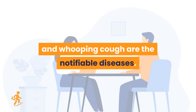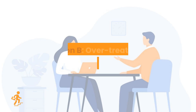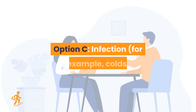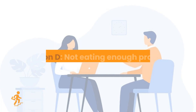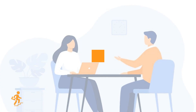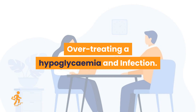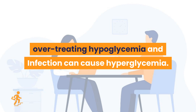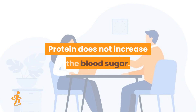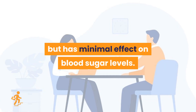Question 17. What are the common causes of hyperglycemia? Option A: Eating too much carbohydrate. Option B: Overtreating a hypoglycemia. Option C: Infection, for example colds, bronchitis, flu, vomiting, diarrhea, urinary infections, skin infections, and stress. Option D: Not eating enough protein. Right answers are Option A, B, and C. Eating too much carbohydrate, overtreating hypoglycemia, and infection can cause hyperglycemia. Protein does not increase blood sugar; it requires insulin for metabolism but has minimal effect on blood sugar levels.